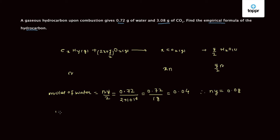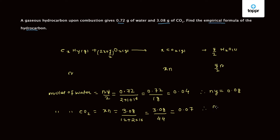Now for the moles of CO2. According to our equation it is X times N, or NX. The weight of CO2 is given as 3.08 grams. The molecular weight of CO2 is 12 plus 2 times 16, which equals 44. So NX equals 3.08 divided by 44, which gives 0.07. Therefore NX equals 0.07.